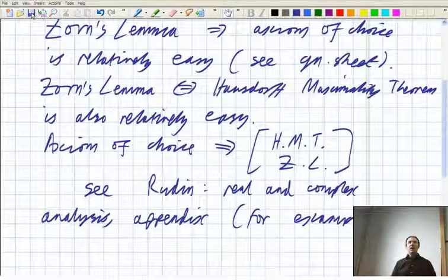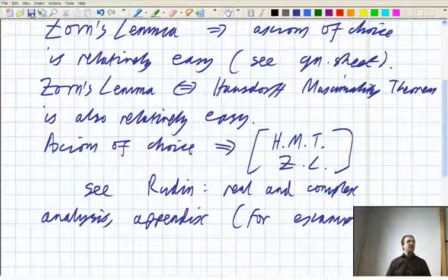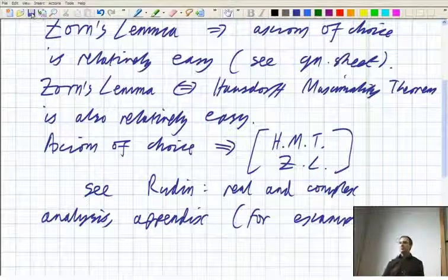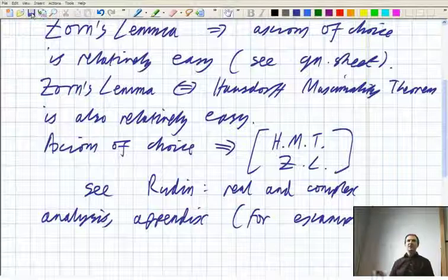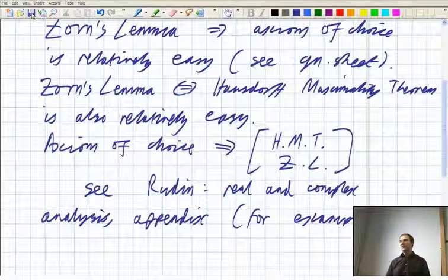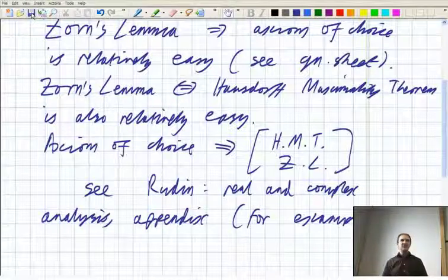So there's things like, coming later, like the Hahn-Banach extension theorem. You don't need the axiom of choice in its full form to prove that if you're working with a separable normed space. But if you're working with something really big, which doesn't have a countable dense subset, then you're going to need something like the axiom of choice to get you the full power of the Hahn-Banach extension theorem.